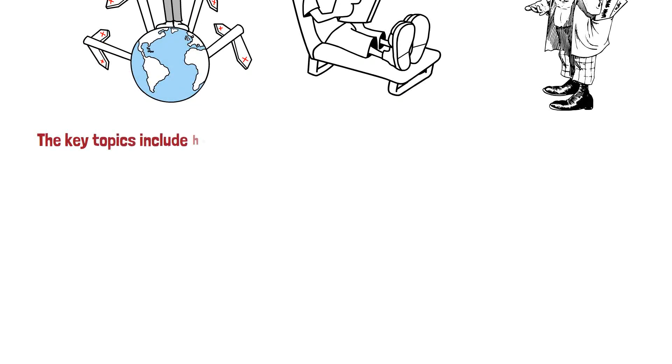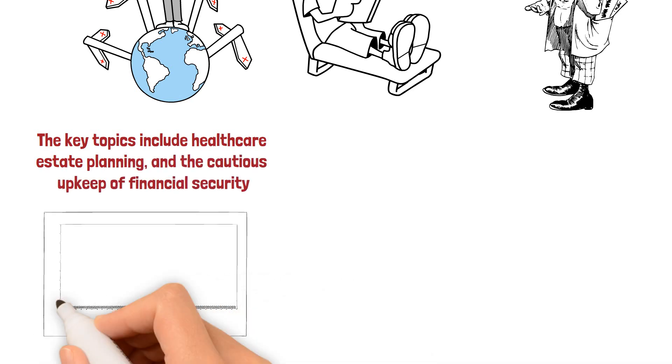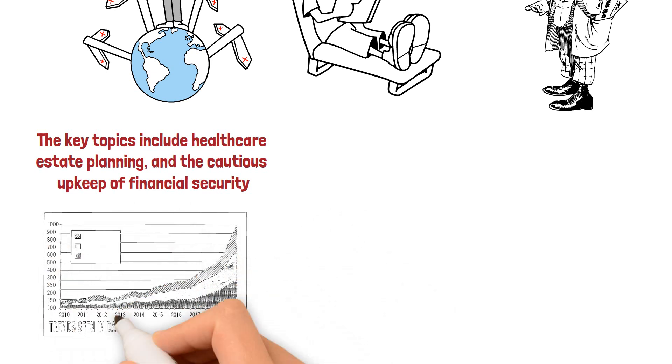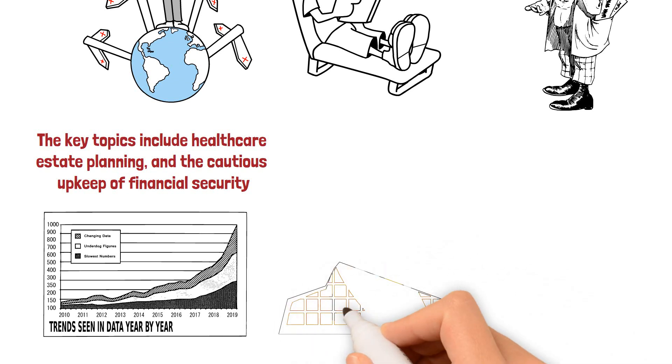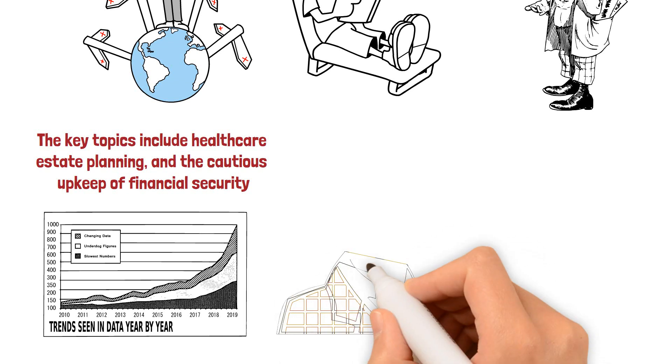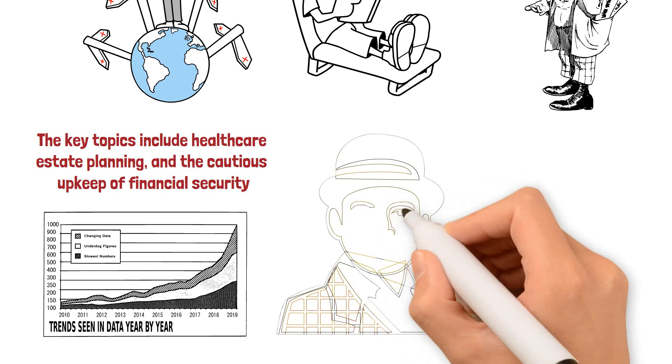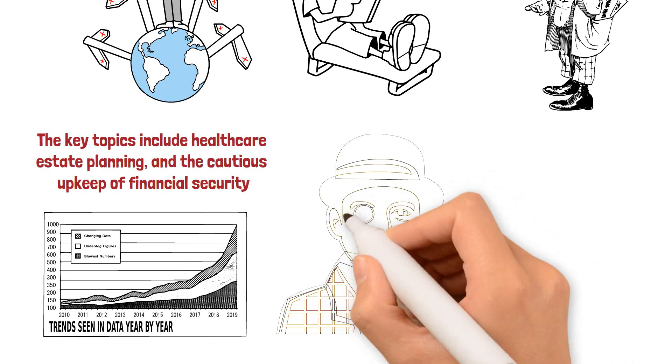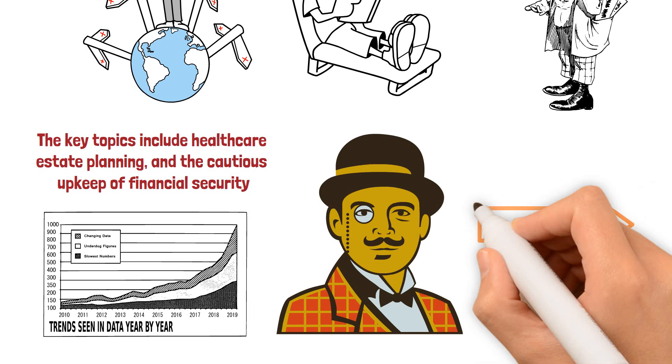The key topics include healthcare, estate planning, and the cautious upkeep of financial security. The data depicts people in their 60s and older, showing how each choice they make affects the legacy they leave behind. Come along as we examine the subtleties of financial planning at this point in life and reveal the startling net worth figures for those deciding how to live after retirement. It's about safeguarding a future for future generations, not just about the end.